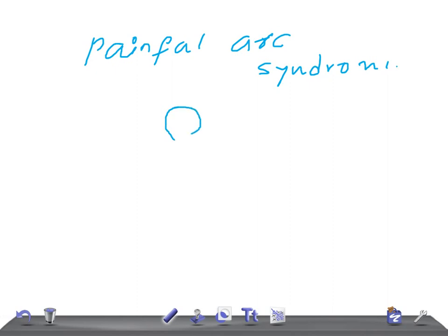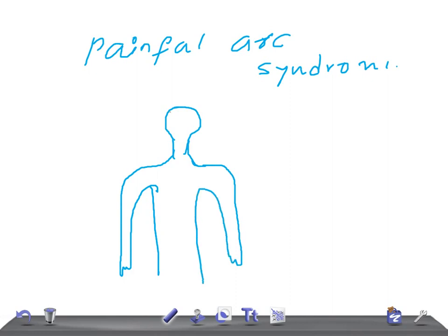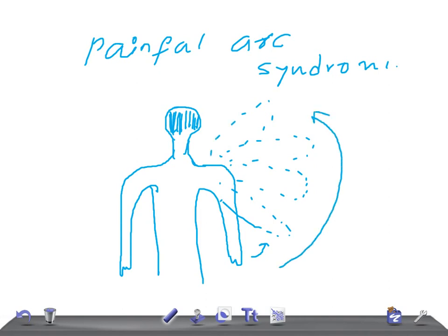Let me draw and show you. This is a human — here's the head — and this is a posterior view. This is one hand and this is the other hand. So when the right hand starts moving upwards, there is an abduction. This arc of movement is known as a painful arc, where he has pain in the shoulder and upper arm during the mid range of glenohumeral abduction.